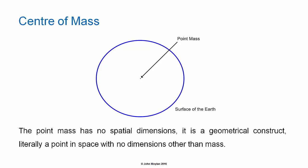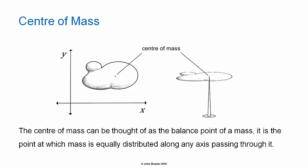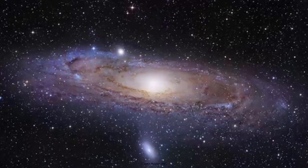The center of mass can be thought of as the balance point of a mass. It is the point at which mass is equally distributed along any axis passing through it. So the center of mass is the point that you can balance the mass on, as illustrated in the case of an irregularly shaped mass being balanced on the point of a pin.